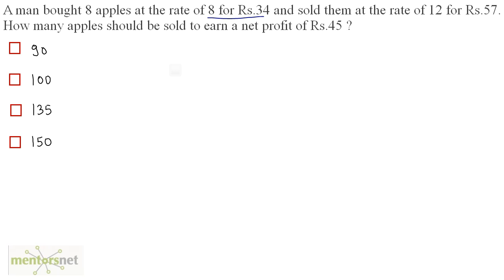We have been given the cost price of 8 apples which is 34 rupees. So we can find out the cost price of 1 apple: cost price of 1 apple equals cost price of 8 apples divided by 8, so 34 divided by 8, which is equal to 4.25.